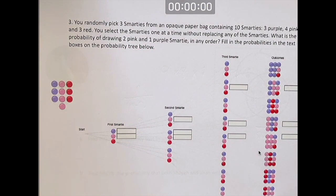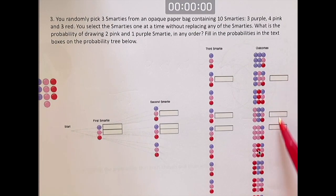We're talking pink, pink, purple; pink, purple, pink; or purple, pink, pink. We need to figure out the probability of each of these and then add them together.